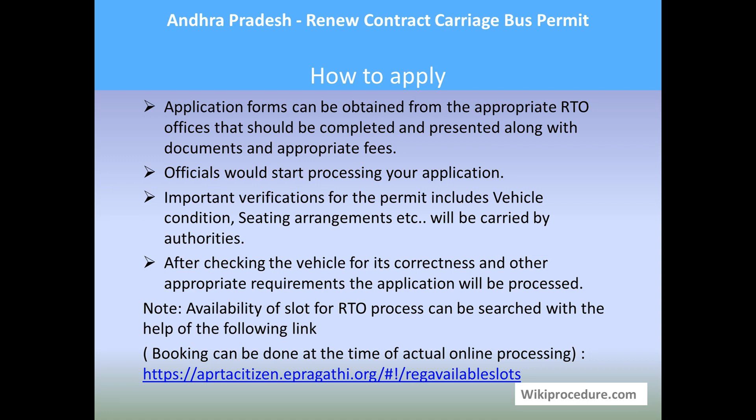Please collect the application form, fill the form, attach all the documents, and submit them to an officer at the RTO, who will mark the amount you need to pay and direct you to the right counter. Pay the fees and submit your documents. They will start processing your application to renew the contract carriage bus permit. They will do verifications like seating arrangements and the condition of the vehicle.